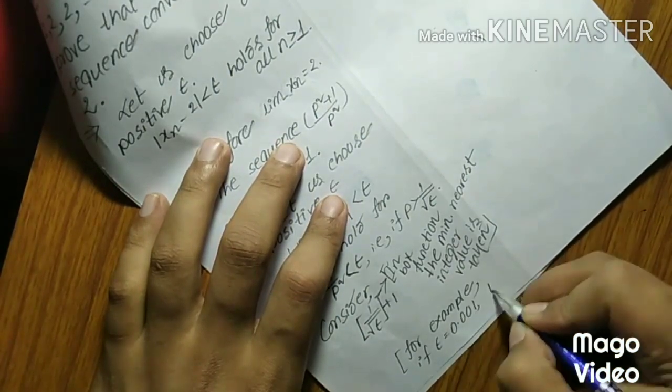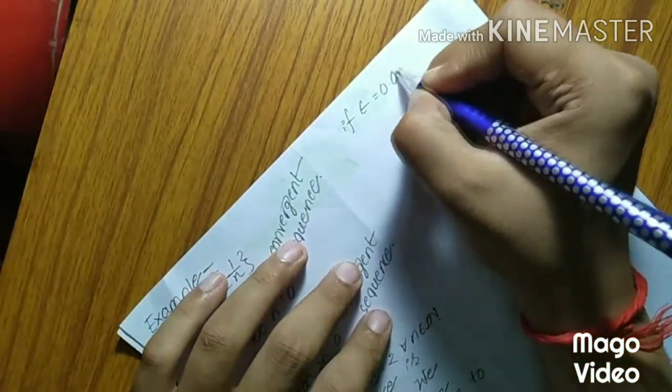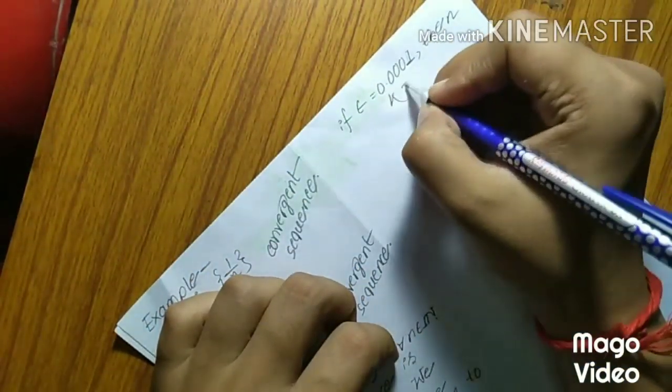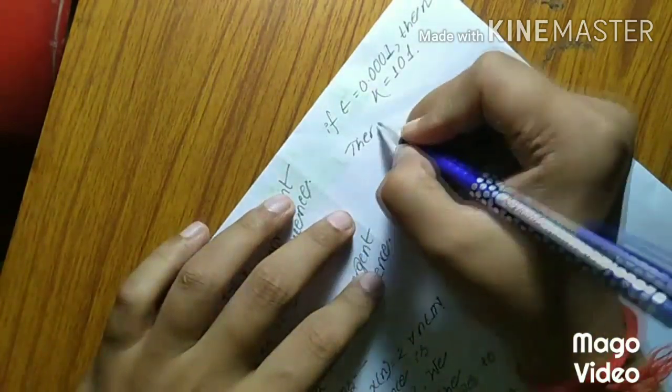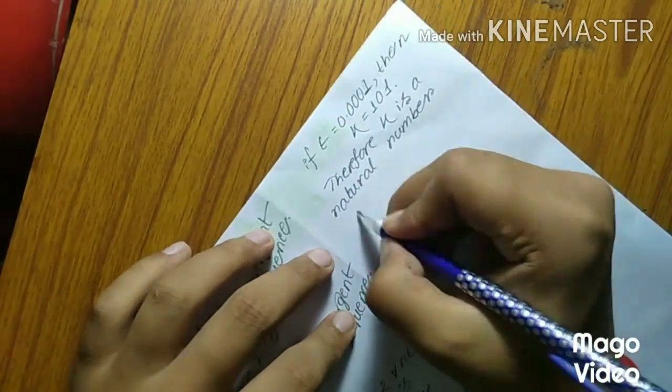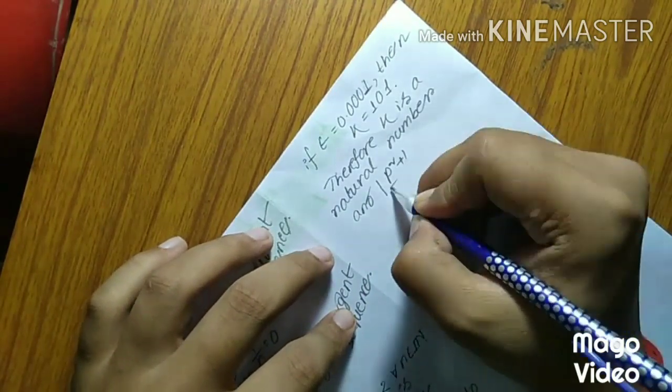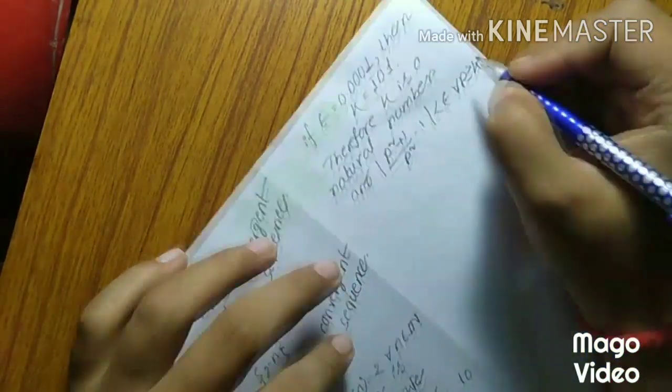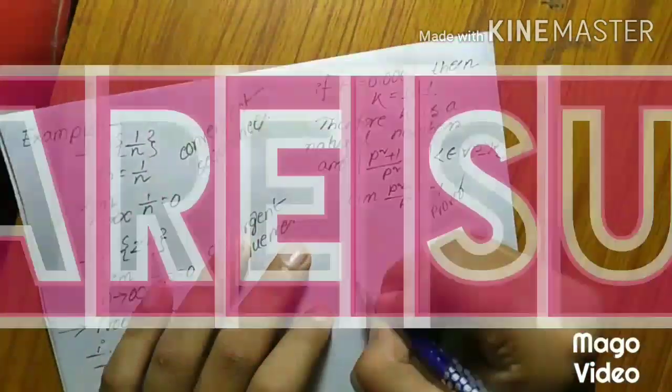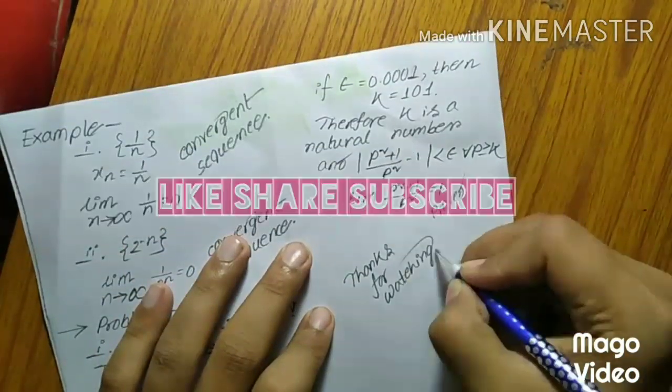For example, if epsilon equals 0.001 then k equals 101. If epsilon equals 0.0001 then k equals 101. Therefore k is a natural number and mod of p square plus 1 upon p square minus 1 less than epsilon for all p greater than equal to k.